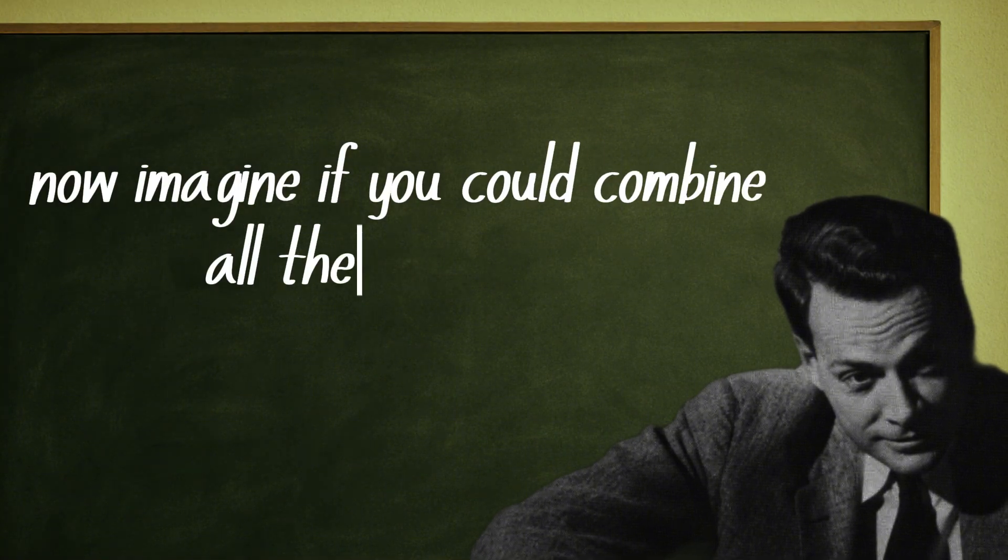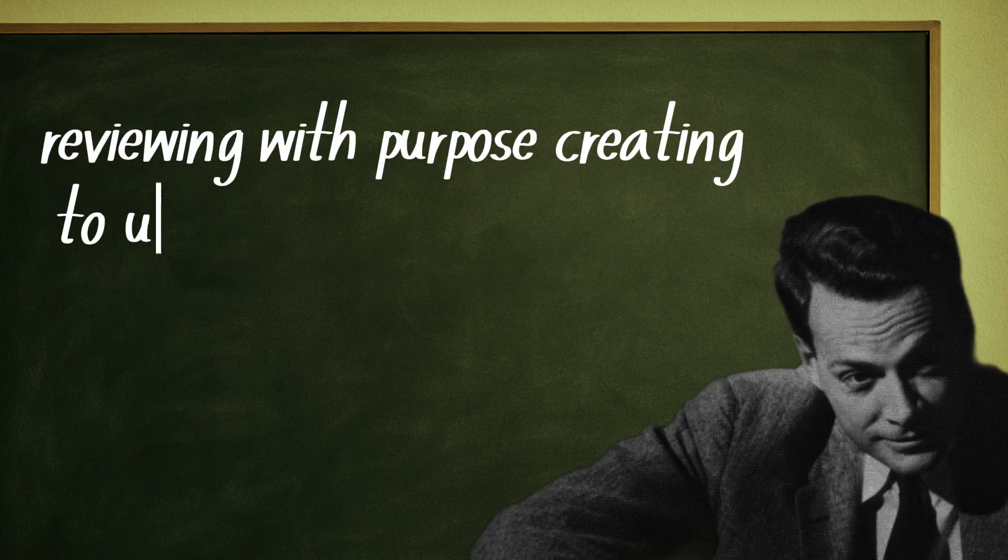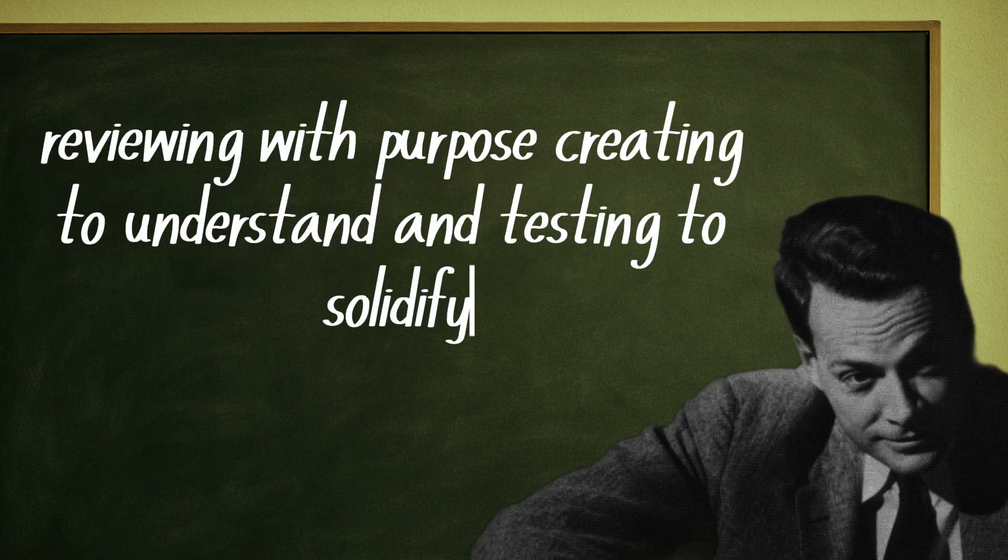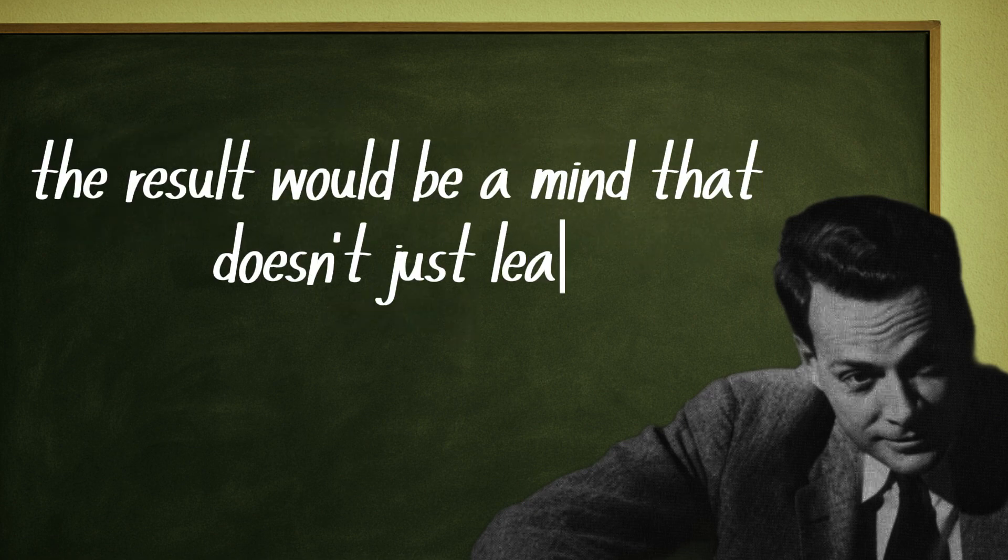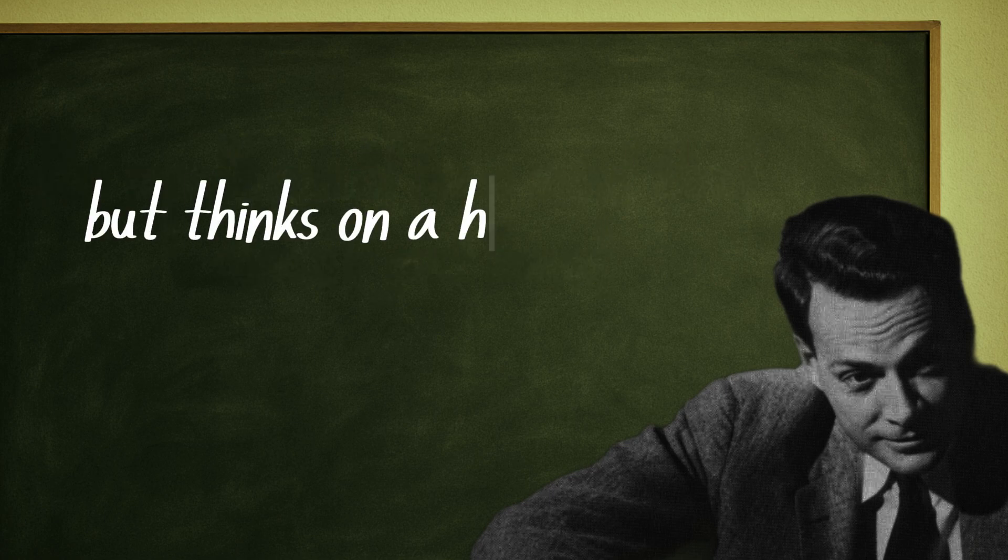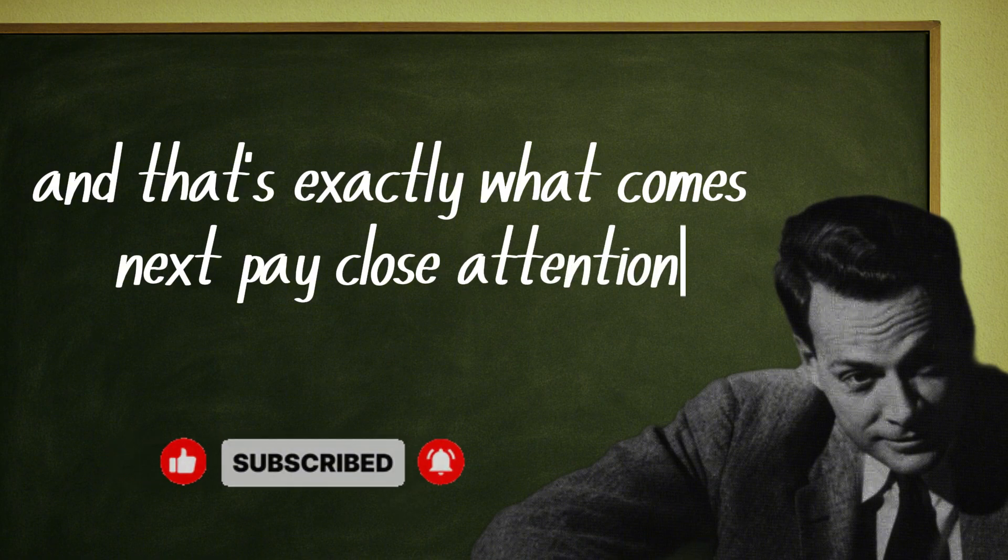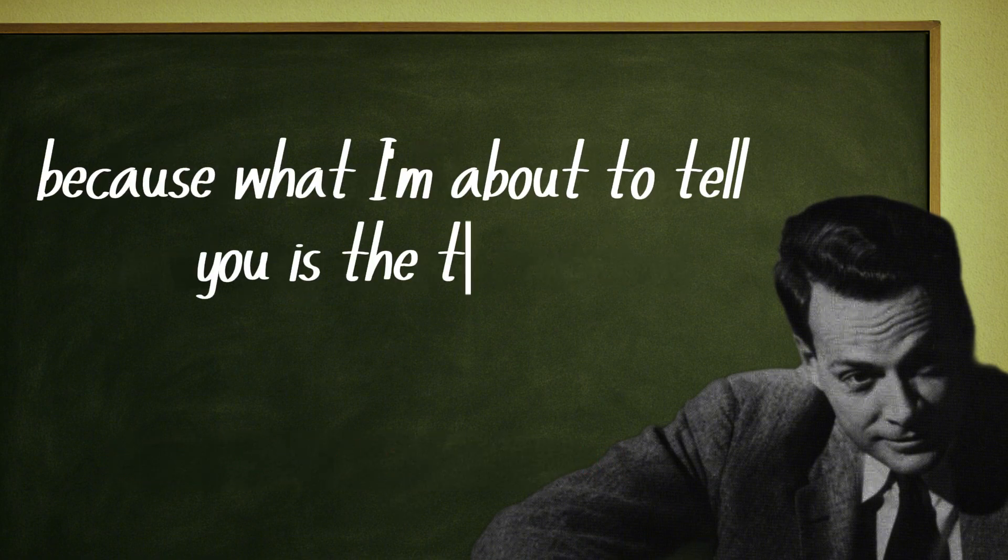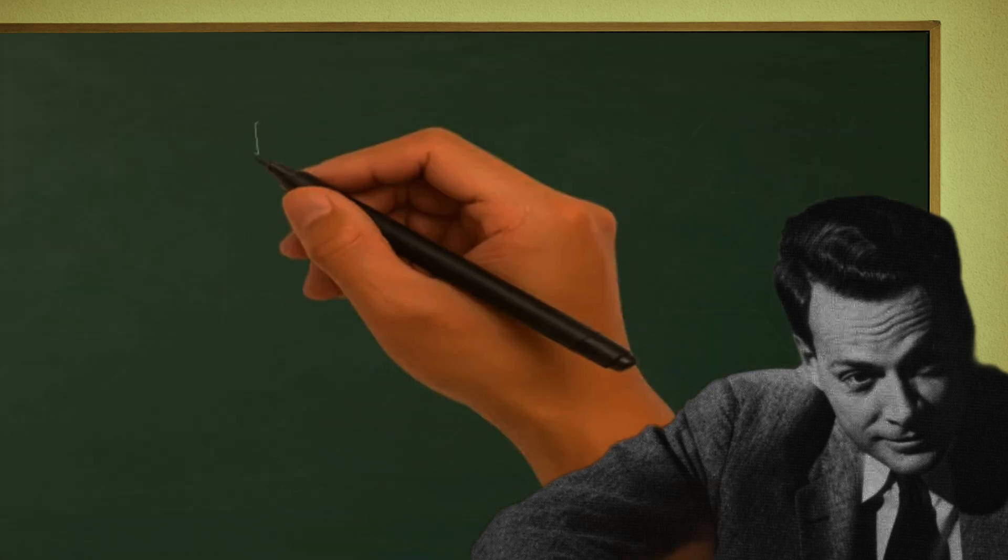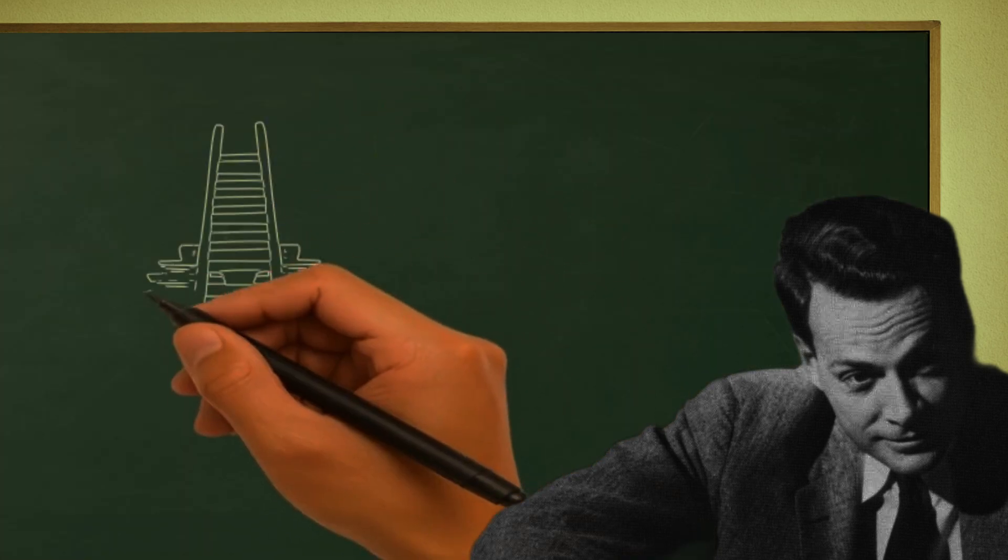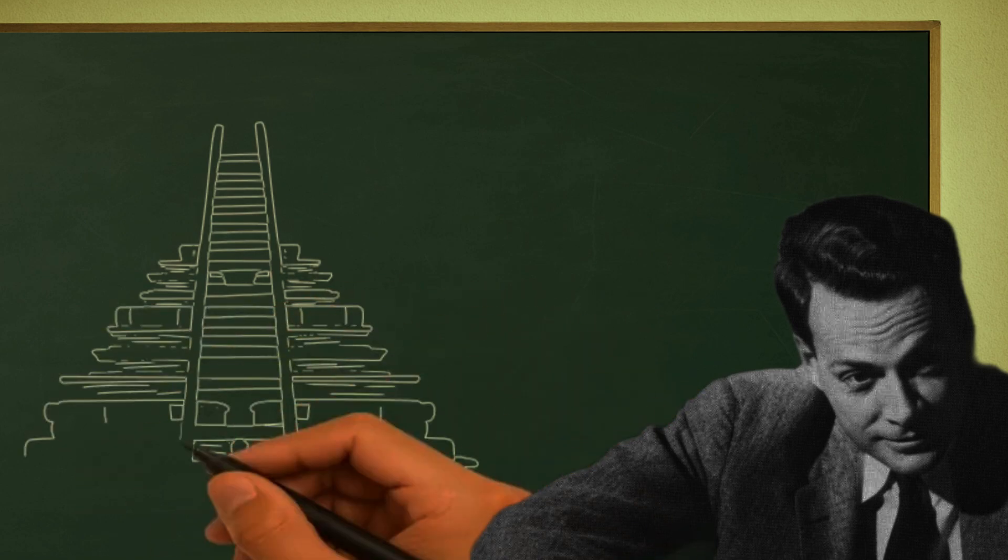Now imagine if you could combine all these principles—reviewing with purpose, creating to understand, and testing to solidify—into a single way of thinking. The result would be a mind that doesn't just learn but thinks on a higher level. And that's exactly what comes next. Pay close attention, because what I'm about to tell you is the turning point between ordinary learning and extraordinary thinking. The fourth principle of a genius mind is higher-order thinking, the kind of reasoning that transforms facts into wisdom.